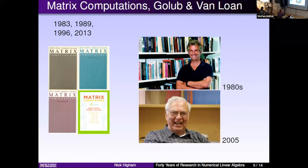It was in LaTeX for the first time, which was a great opportunity to be involved in the production of the second edition. There have been four editions in total now. This is Charlie in his office in the late 70s or early 1980s, and Gene Golub — this was taken at UMIST in 2005 on one of his visits to Manchester. A really important book, and still is today.